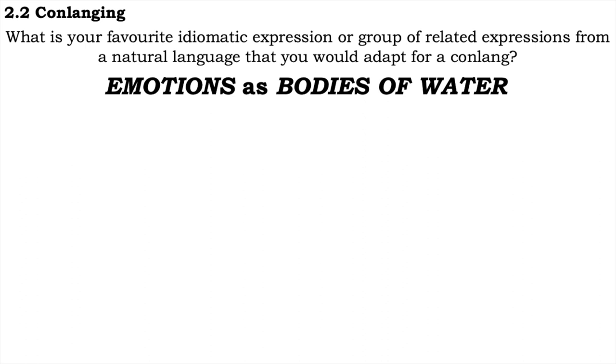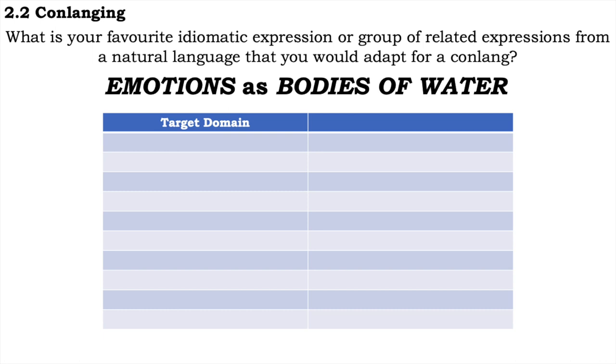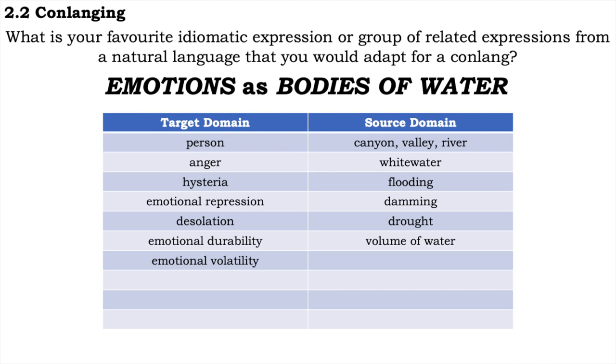Emotions as bodies of water. Here, emotions are the target domain, and bodies of water is the source domain. Because emotions are conceptualised as bodies of water, you get mappings like the following: a person is a canyon or a valley, anger is whitewater, hysteria is flooding, emotional repression is damming, desolation is drought, emotional durability is commensurate with the volume of the water, emotional volatility is mapped onto bends in a river, being affected is paralleled by pollution or silt, insanity is breaking banks, and emotional brittleness is frozen water.